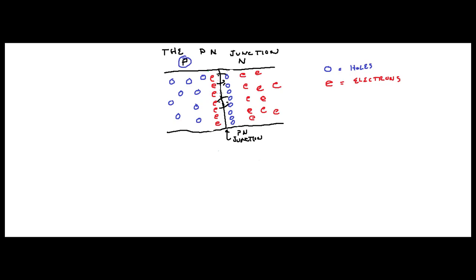Now, remember — electrons, like charges, repel. So eventually you're going to reach equilibrium. Equilibrium is reached once this potential barrier — this potential driven here, where you have a positive hole on one side and a negative on the other side — gets large enough to repel further electrons from crossing the junction. For silicon, that barrier potential is going to be approximately 0.7 volts. For germanium, that's going to be approximately 0.3 volts at 25 degrees C.